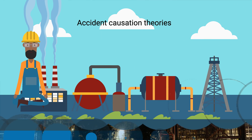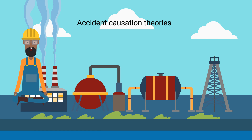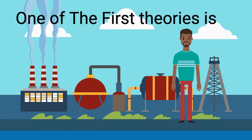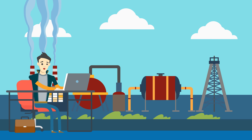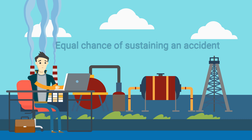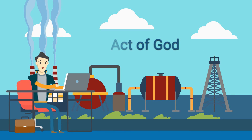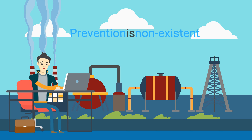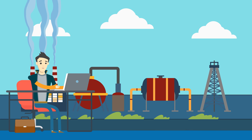Accident Causation Theories. A number of theories have been put forward over the last century with respect to the causes of accidents. One of the first theories is the Pure Chance Theory. This theory states that everyone in the population has an equal chance of sustaining an accident and treated accidents as an act of God, leaving one to accept the fact that prevention is non-existent. It suggests that no discernible pattern emerges in the events that lead up to an accident.